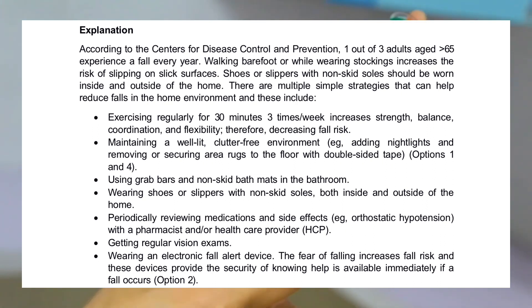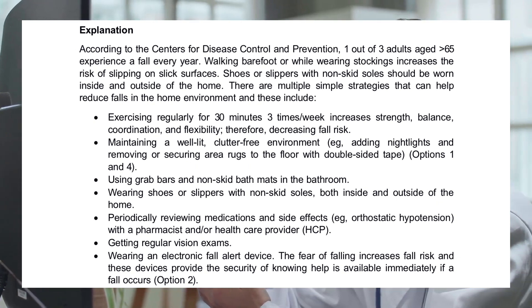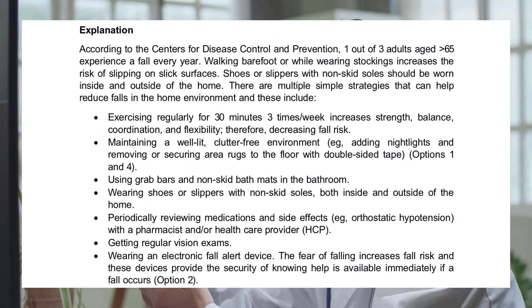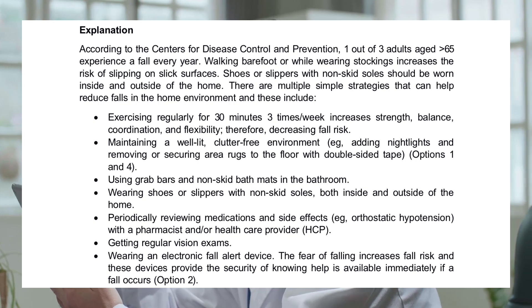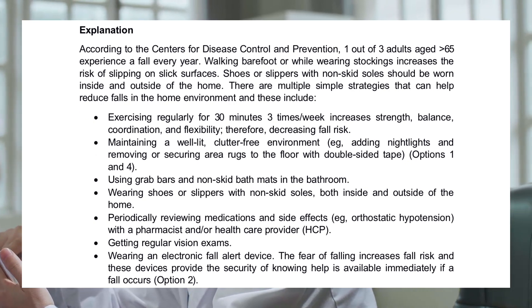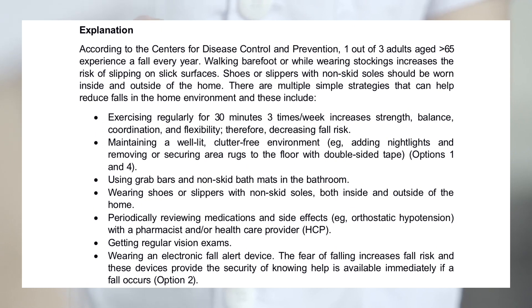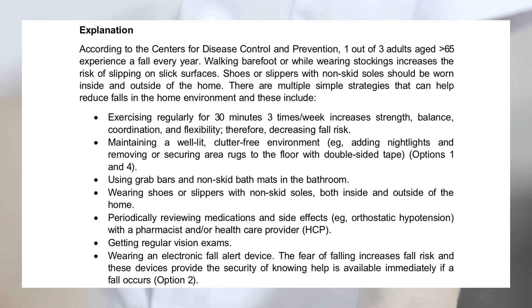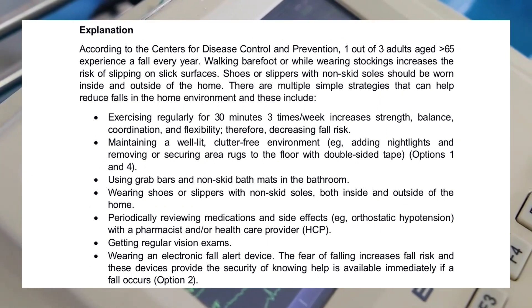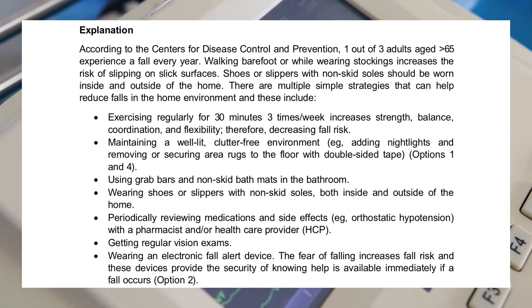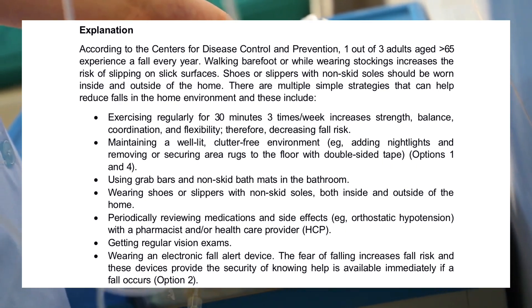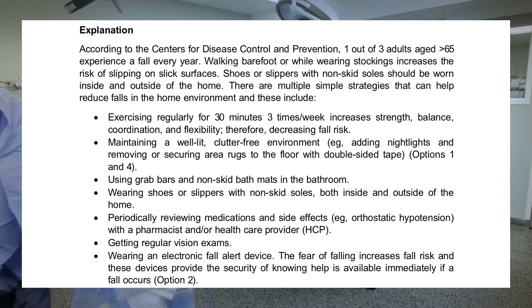There are multiple simple strategies that can help reduce falls in the home environment, including: exercising regularly for 30 minutes three times a week to increase strength, balance, coordination, and flexibility, thereby decreasing fall risk; maintaining a well-lit, clutter-free environment (e.g., adding nightlights and removing or securing area rugs to the floor with double-sided tape — options 1 and 4); using grab bars and non-skid bath mats in the bathroom; wearing shoes or slippers with non-skid soles both inside and outside of the home; periodically reviewing medications and side effects (e.g., orthostatic hypotension) with a pharmacist and/or healthcare provider; getting regular vision exams; and wearing an electronic fall alert device. The fear of falling increases fall risk, and these devices provide the security of knowing help is available immediately if a fall occurs (option 2).